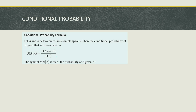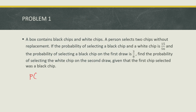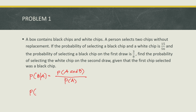Using the formula: P(B|A) = P(A and B) / P(A). In this case, we want P(white on second draw | first chip is black), which equals P(white and black) over P(black).